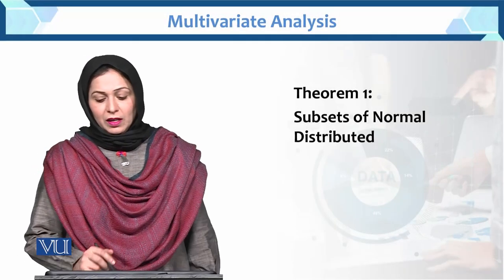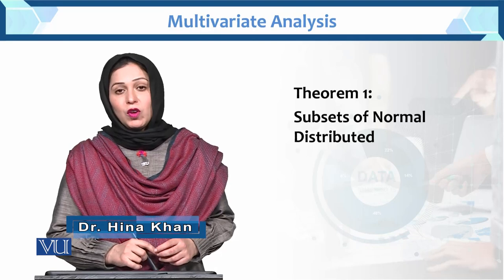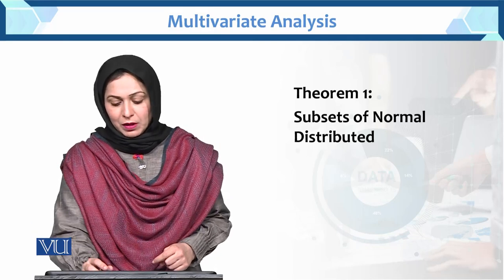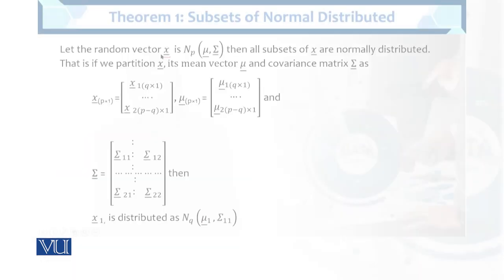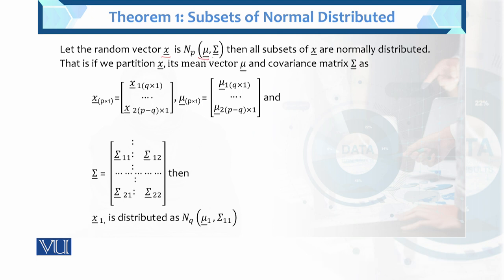Dear student, this is Theorem 1 of the Subset of Normal Distribution. Let the random vector x be multivariate normally distributed with mean vector mu and variance-covariance matrix sigma. Then all subsets of x are normally distributed.